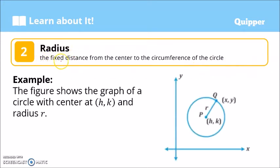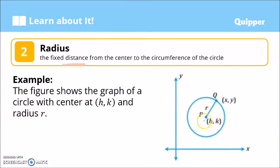The radius is the fixed distance from the center to the circumference of the circle. This is the set of all the points that are equidistant from this point right here. The figure shows the graph of a circle with center P, where the coordinates of that point are (h, k) — h is the x-coordinate and k is the y-coordinate — and the radius r.